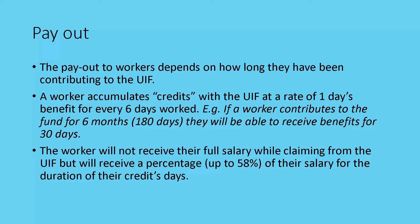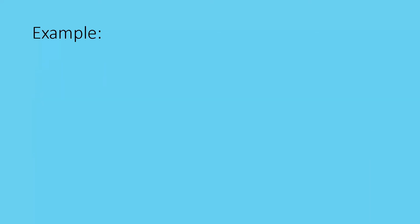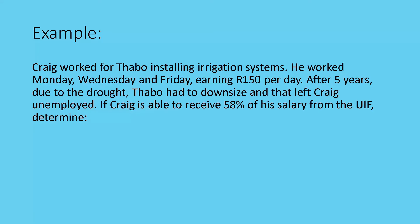Let's take a look at an example. We've got Craig, who worked for Tabo as an installer of irrigation systems. He works Mondays, Wednesdays, and Fridays at 150 rand per day — those days add up to well more than 24 hours a month.